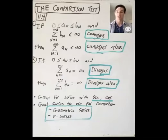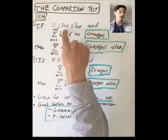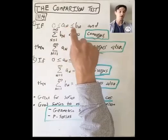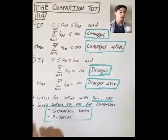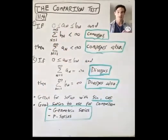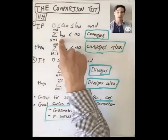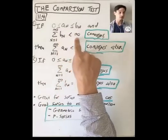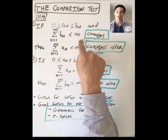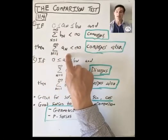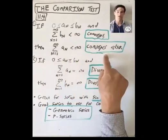We'll start first with the comparison test. So what does the comparison test say? If we have two sequences a_n and b_n, and they're both non-negative, and the b_n's are always bigger than the a_n's, if the sum of the b_n's — the sum of the bigger things — converges to something less than infinity, then the sum of the a_n's, the sum of the smaller things, converges also.